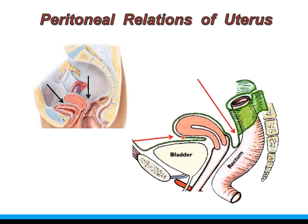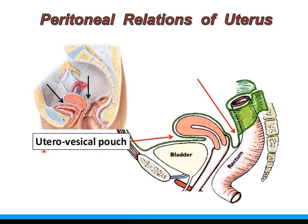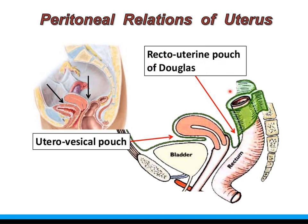The visceral peritoneum, while reflecting onto the superior surface of the urinary bladder anteriorly, shows a deep indentation. Similarly, the posterior layer shows a deep indentation between the rectum and the supravaginal portion of the cervix. Such deep indentations of peritoneal layers are known as peritoneal pouches. The peritoneal pouch between the uterus and the urinary bladder is the uterovesical pouch. The peritoneal pouch between the uterus and the rectum is the recto-uterine pouch, also known as the pouch of Douglas.